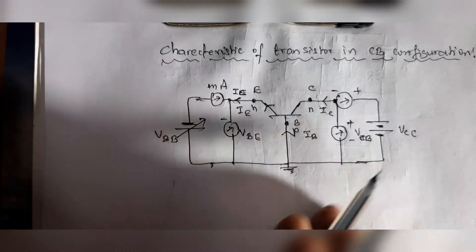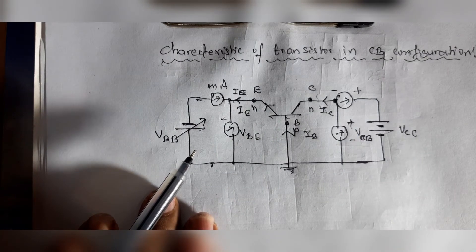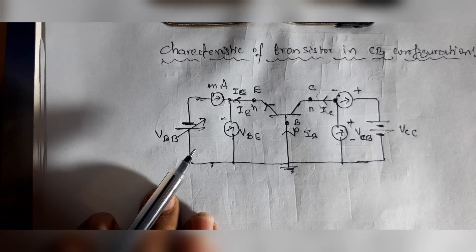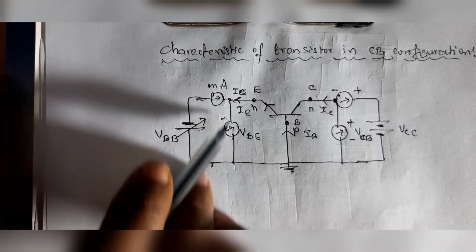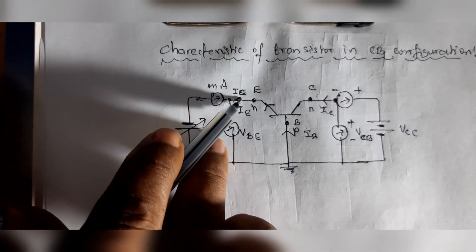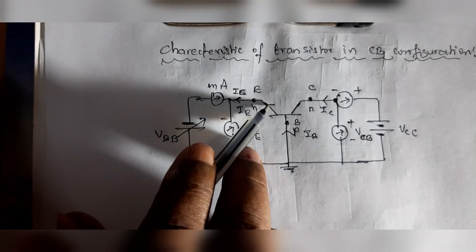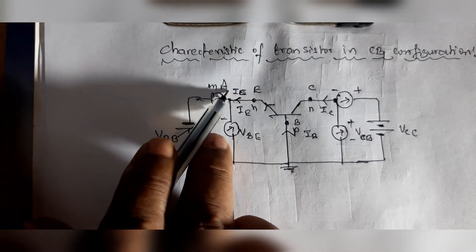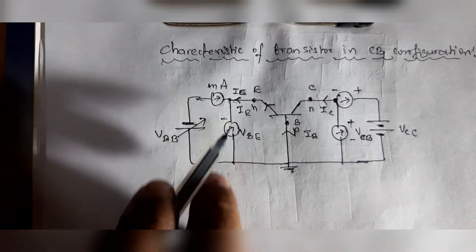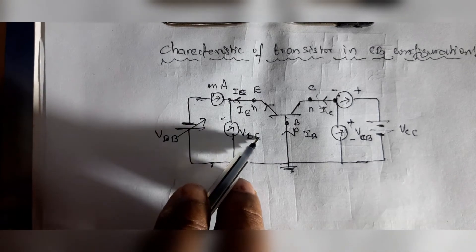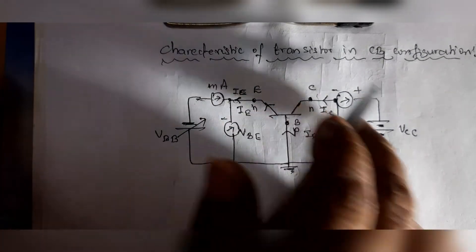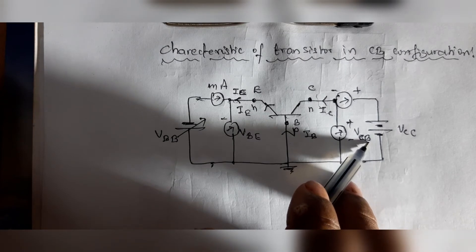The characteristics of a transistor are classified as input characteristics and output characteristics. Input characteristics are obtained by plotting the input voltage applied between the base and emitter — that is VBE — against the emitter current IE, keeping the output voltage VCB constant.